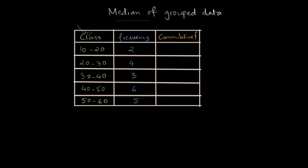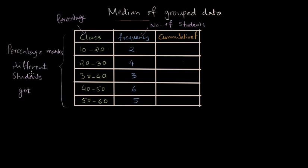This data is about the percentage that different students have got in the class. This class means the percentage range and the frequency is number of students. This table is telling us about the percentage marks different students have got, and our objective here is to find the median of this particular group data.